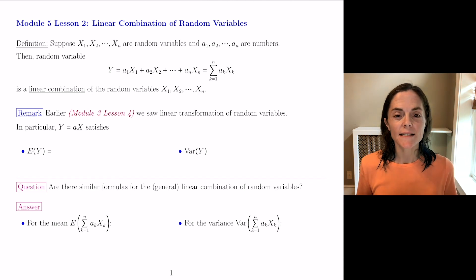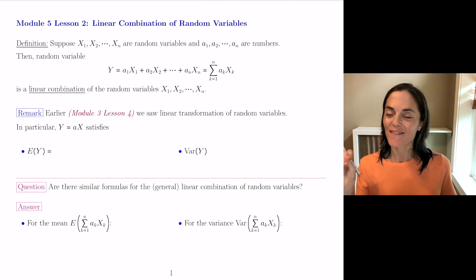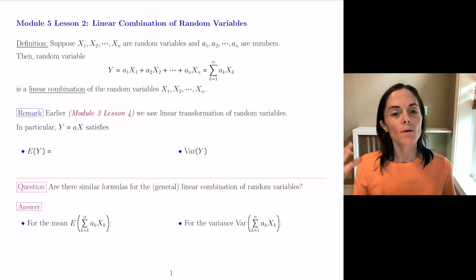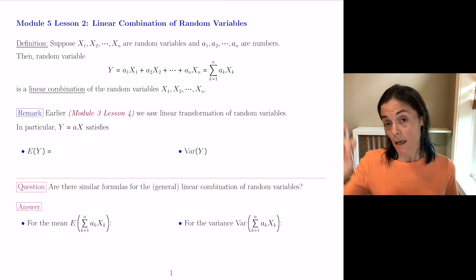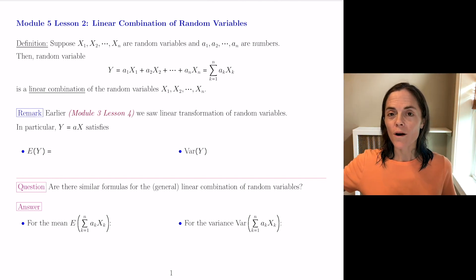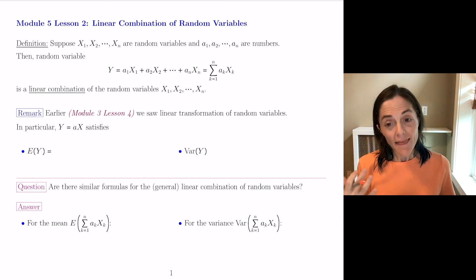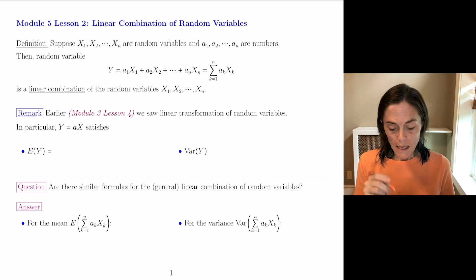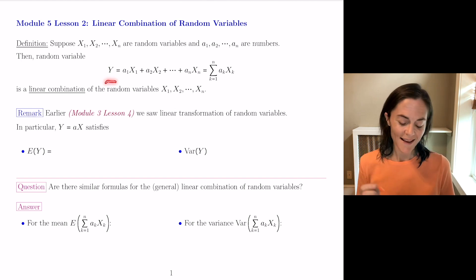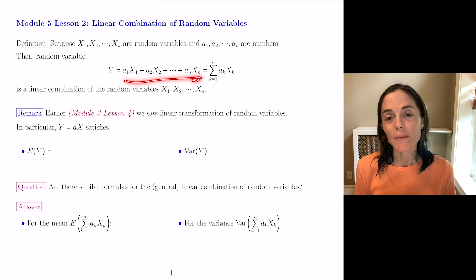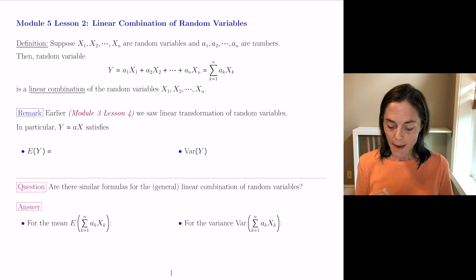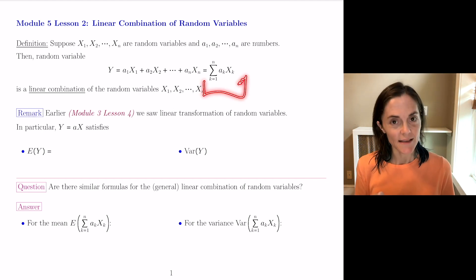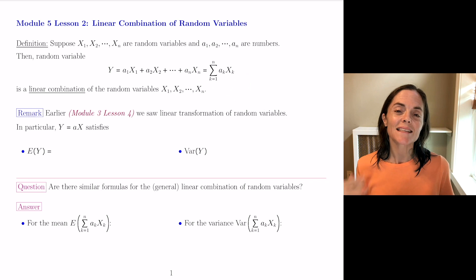Hi class, we are here to discuss linear combination of random variables. Suppose we have n random variables, x1 through xn. These could be discrete or they could be continuous. Then random variable y is this sum: a1·x1 plus a2·x2, plus all the way out to an·xn. In summation notation, it looks like this. This is what's called a linear combination of these random variables, x1 through xn.